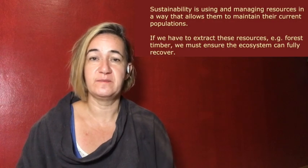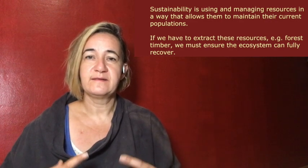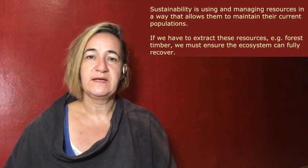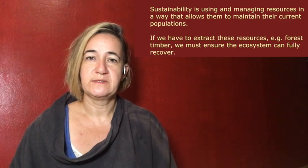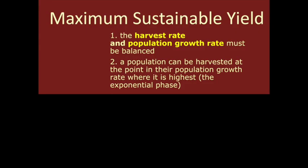While we're talking about what the IB wants you to know and what their expectations are, let's talk about the definition for sustainability, because that word is in maximum sustainable yield. If we go to the IB guide for ESS, it tells us sustainability is using and managing resources at a rate that allows them to maintain their current populations. So they should be able to continue staying at a level population. Now we've got that word population in there, we can think about how populations behave and whether we can use that to make sure the population stays at a stable level.